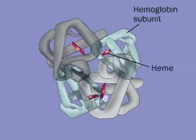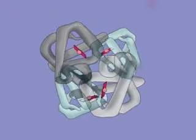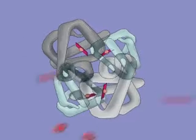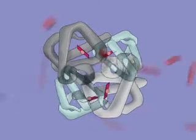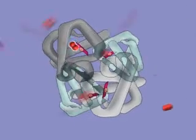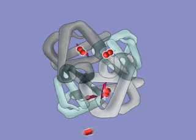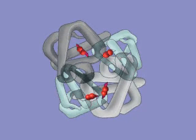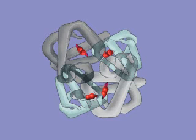Deoxyhemoglobin in the lungs has conformational mobility — it is not rigid. When oxygen enters the lungs, it moves at random and may bind to one of the heme groups on the hemoglobin. The subunit with oxygen bound is stabilized in that form, and its stability makes it easier for oxygen to bind the other subunits.